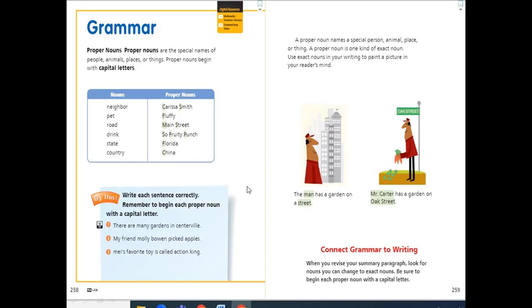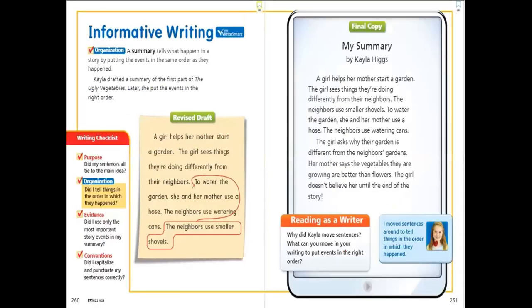So a proper noun names a special person, animal, place or thing. And a proper noun is one kind of exact noun. Use exact nouns in your writing to paint a picture in your reader's mind. So here, it's your turn also. You can draw some pictures and use the proper nouns to describe this picture. And last, we are going to talk about the informative writing. Informative writing. What is the meaning of informative?